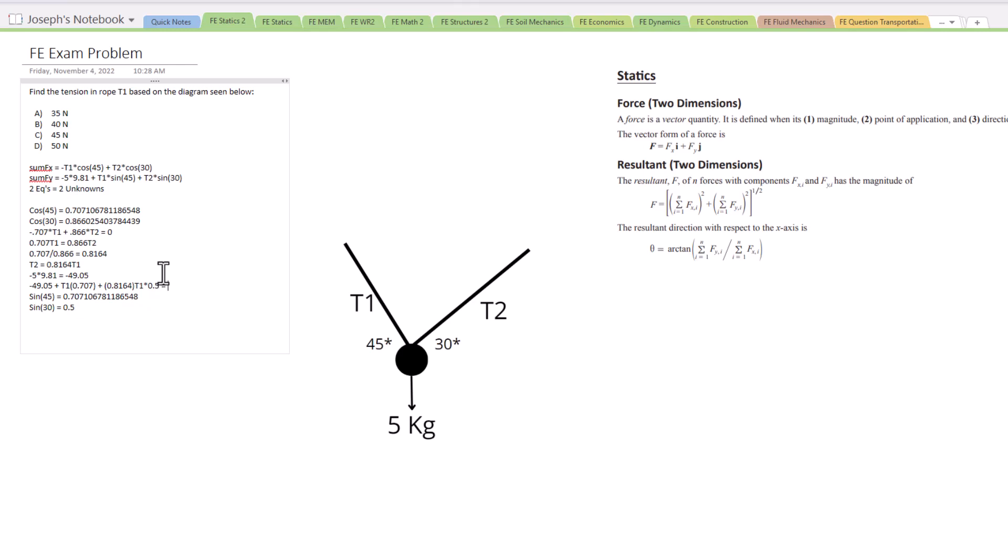That's all going to equal zero. Now we can solve for T1 and find the tension in that first rope. So now we have 49.05 equals, and it's going to equal this big mess here.